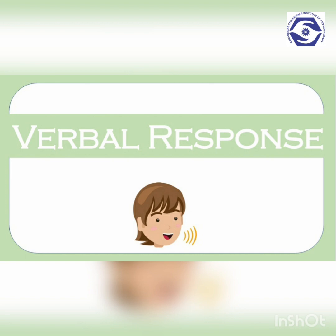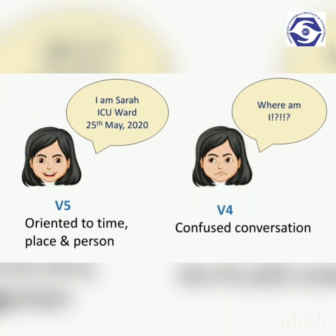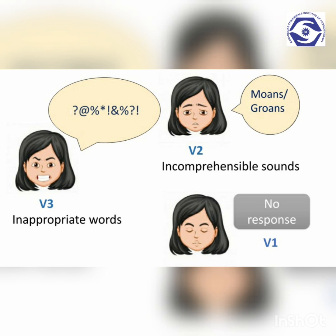Verbal response is the next parameter on the GCS, assessing the area of the brain associated with receptive and expressive speech. Patients score a 5 if oriented in person, place, and time — able to state their name, where they are, and the current month and year. A score of 4 is given if the patient can produce phrases or sentences but is confused and conversation is inappropriate. A score of 3 is given if the patient offers only inappropriate monosyllabic words in response to physical stimulation. A score of 2 is given if the verbal response contains only indistinct mumbling or moaning with no intelligible words. A score of 1 is given if no verbal response is produced despite prolonged and repeated stimulation.